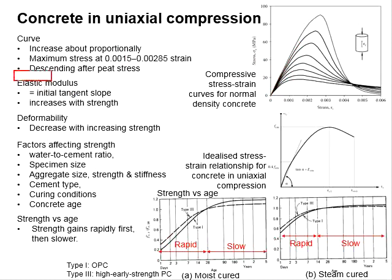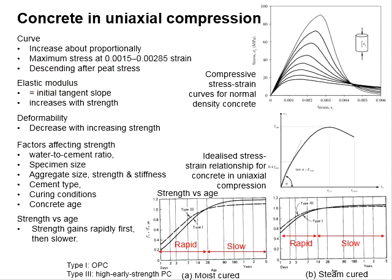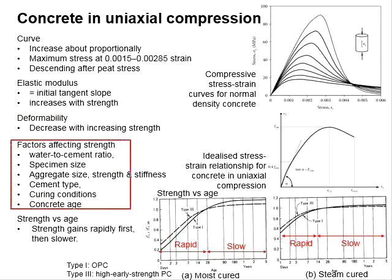The modulus of elasticity basically increases with the strength. The deformability represents the ability of concrete to deform under compressive force. It is basically represented by the elastic modulus or stiffness of the concrete, which decreases with the increase of strength.